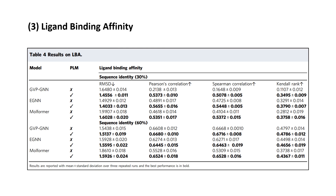Next, ligand binding affinity predicts the strength of a candidate drug molecule's interaction with a target protein by predicting the pK values, where K is the binding affinity in molars. And just like the previous results, the protein language model improves the RMSD correlation and the ranking measures in both cases, where the protein-ligand complexes are split such that no protein in the test dataset has more than 30 or 60% sequence identity with any other protein in the training dataset.